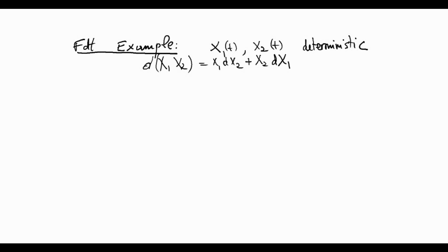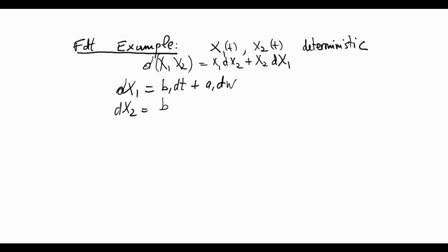I would like to introduce an example where we define two processes dx1 and dx2. dx1 equals b1·dt plus a1·dω, where ω is the Brownian motion. dx2 equals b2·dt plus a2·dω, where ω is the same Brownian motion. And a1, a2, b1, b2 are constants.